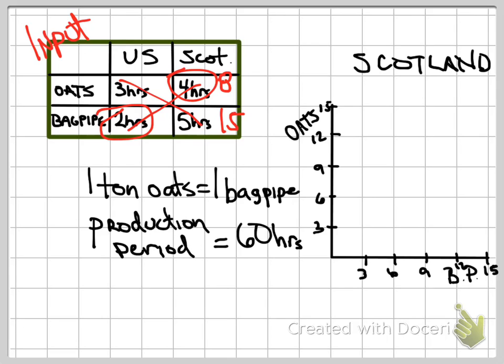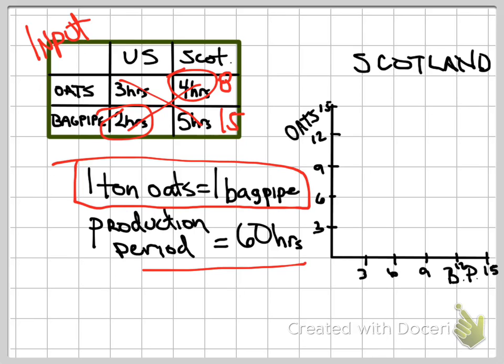The United States has a lower opportunity cost in producing bagpipes. What that would mean is that as we move into this trading relationship, with the terms of trade being one bagpipe to one ton of oats, Scotland is going to be specializing in oats. The United States will be specializing in bagpipes. Another part of that question highlights that there's a production period of 60 hours.